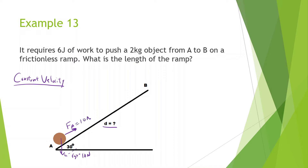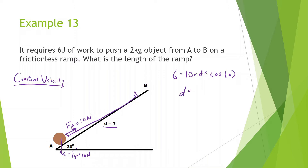The force applied is going to be the same as the force of gravity in the x-direction. So if this is 2 kg, the force of gravity is 20 times sine of 30, which is 10 N. So force applied is also 10 N. Work done by the force applied equals 10 times the distance times cosine of theta. Since the force is in the same direction as motion, theta is 0. Work applied is 6 joules, so distance is 6 divided by 10 — the answer is 0.6 meters.